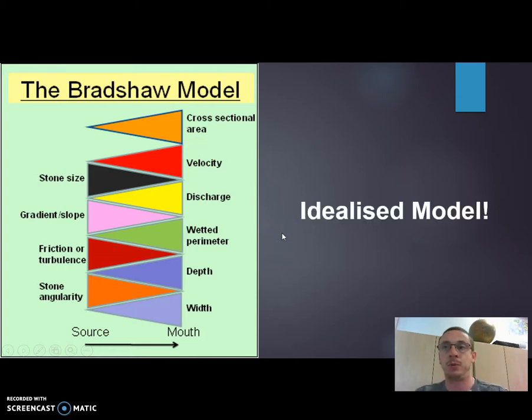Now, key point, and I'm going to make this point again later, is this is an idealized model. This is, if everything is absolutely perfect, this is what we'll see. We will spend some time, we'll go out and we'll look at rivers, and you'll see you won't get all of these all the time. And we'll talk about the reasons for that when we're out in the field.